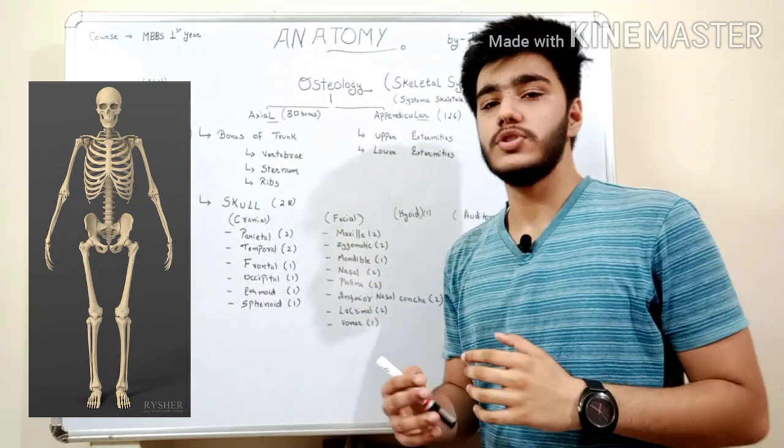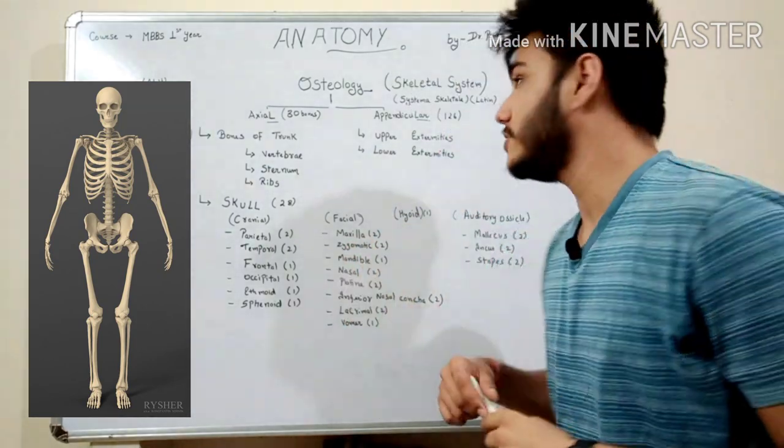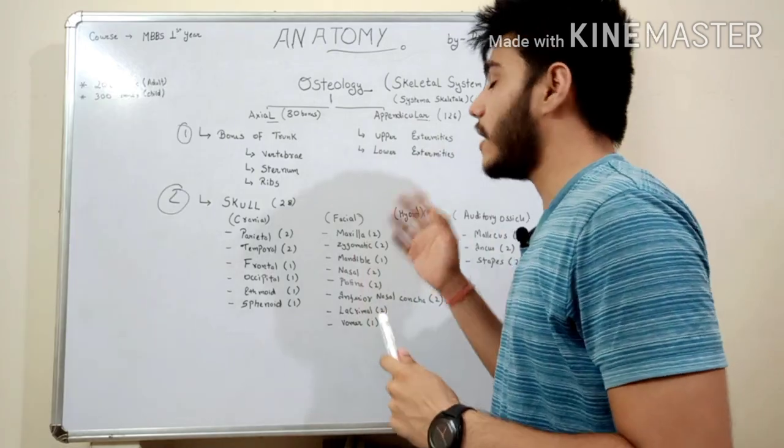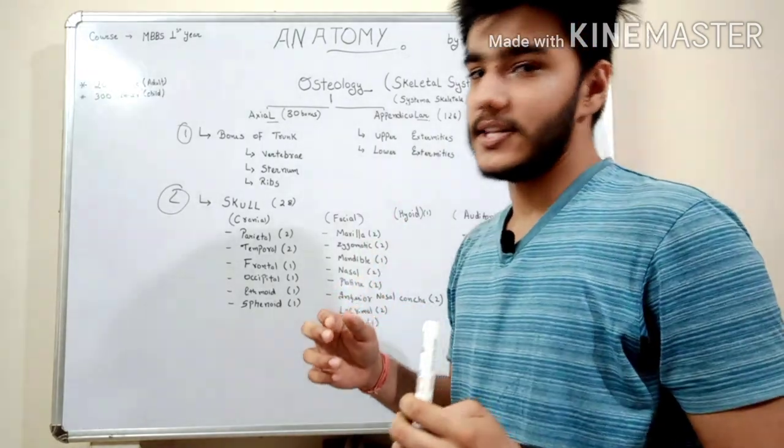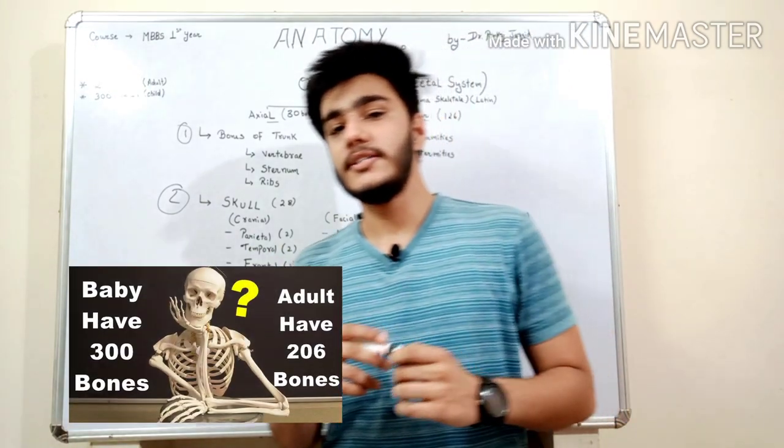So the study of bones is called osteology. We'll learn briefly about osteology. Osteology is the skeletal system, a part of the human body. The human body's skeletal system consists of 206 bones in adults.